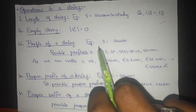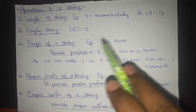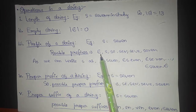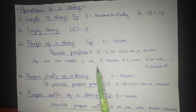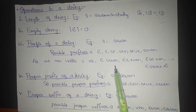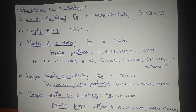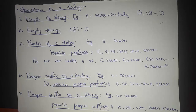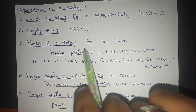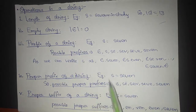A prefix of a string is the number of leading symbols in a string. For example, for S = 'SEVEN', the possible prefixes include Epsilon, S, SE, SEV, SEVN, and SEVEN itself. A proper prefix of a string is any number of leading symbols other than zero — we do not consider the empty string Epsilon, unlike a regular prefix.